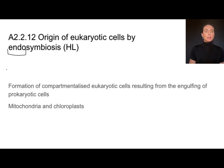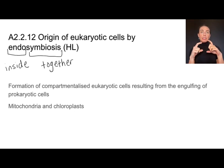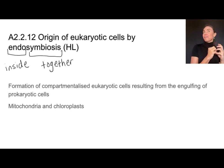If we break down this word, endo meaning inside and symbiosis — they're working together somehow — so some kind of relationship between these two things. And this is all about the formation of those compartmentalized eukaryotic cells that resulted from engulfing prokaryotic cells.